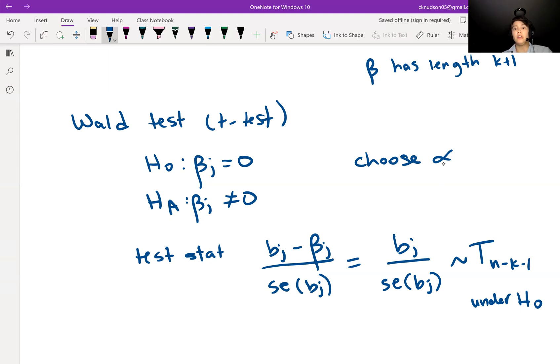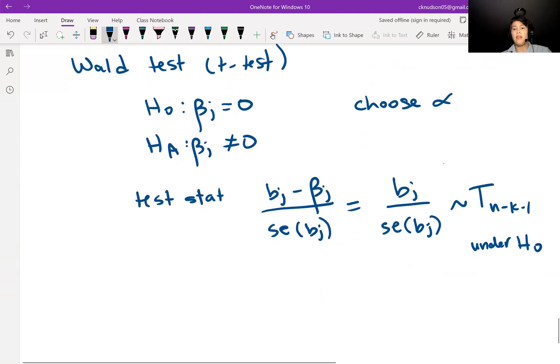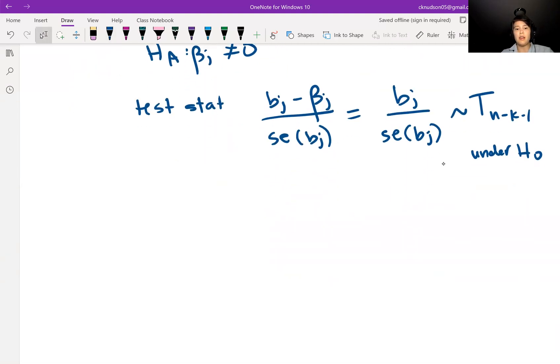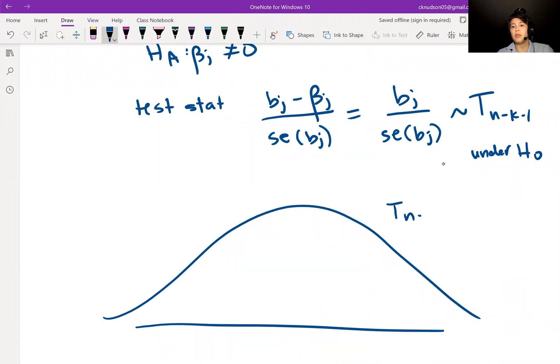You go ahead, you grab the value for BJ and you grab its standard error, and then just calculate that ratio there. Then compare this to a T distribution with N minus K minus one degrees of freedom.